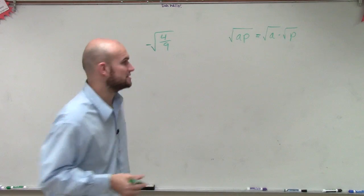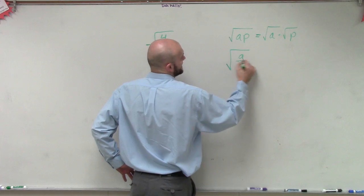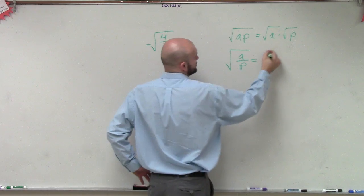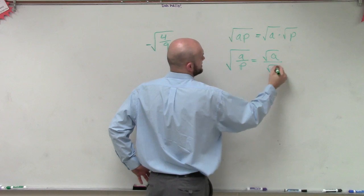That's also going to work for division. So therefore, if I have the square root of a divided by p, that's just going to equal the square root of a divided by the square root of p.